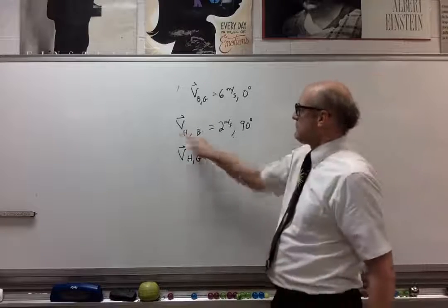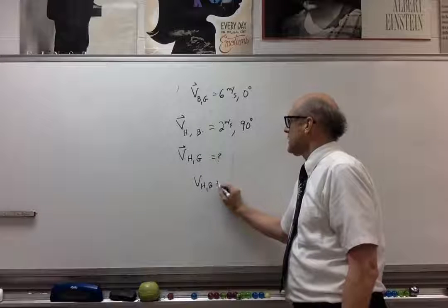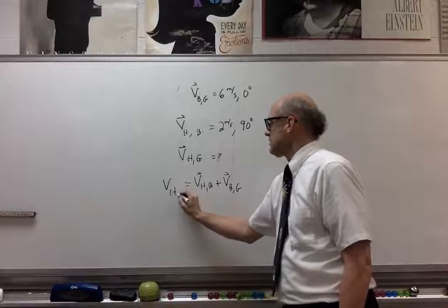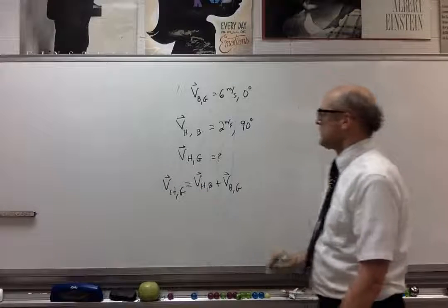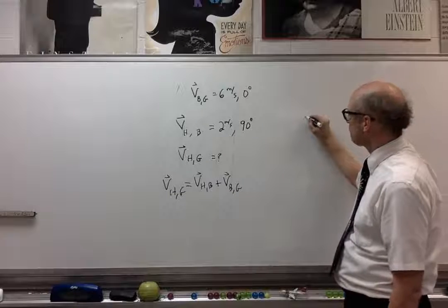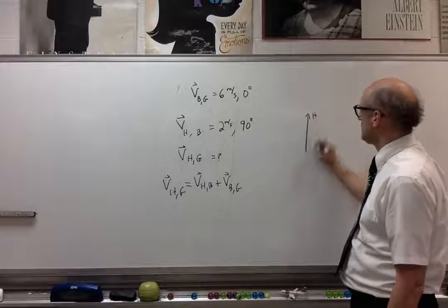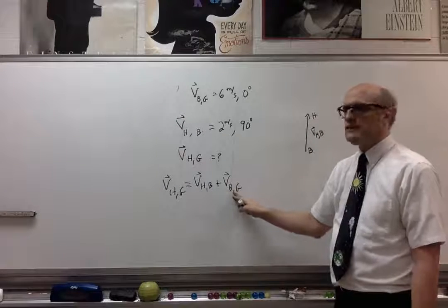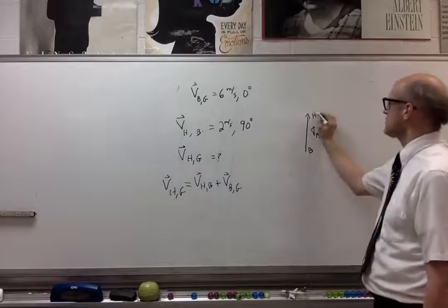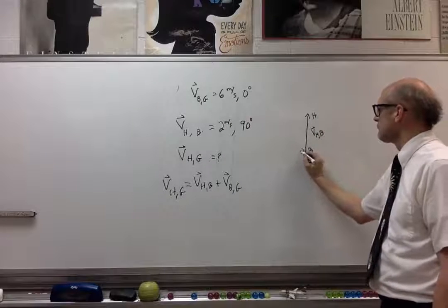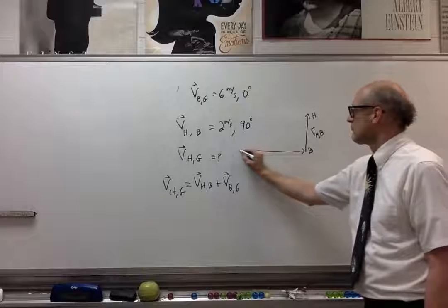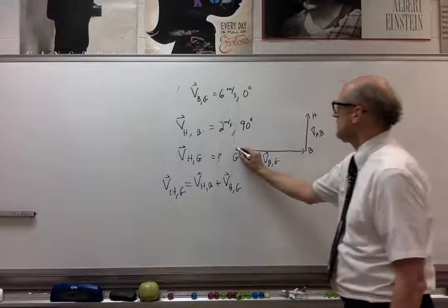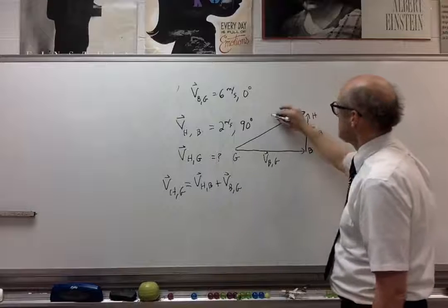So if we take V_HB and add it to V_BG we get V_HG. In the vector diagram, V_HB points north. We add to that V_BG which is east at 6 meters per second. The unknown V_HG is represented by the resultant arrow.